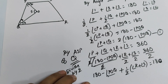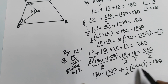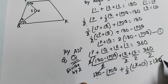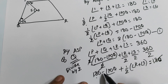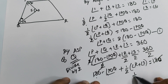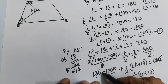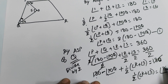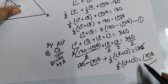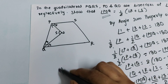We can cancel 180 from both sides since 180 minus 180 is zero. This leaves minus angle POQ plus half of angle R plus angle S, so moving the angle POQ term to the other side: angle POQ equals half of angle R plus angle S. This is exactly what we were supposed to prove. Hence it is proved.